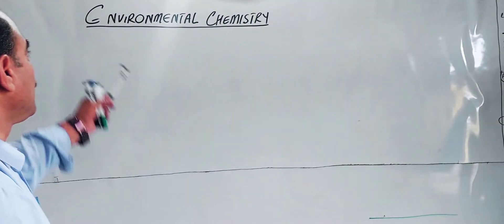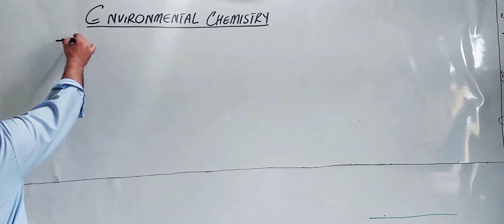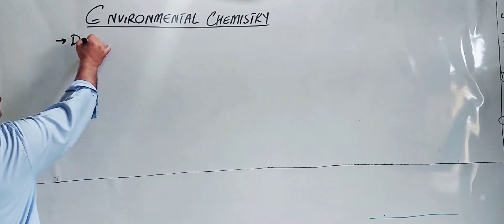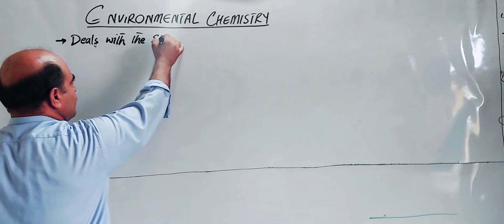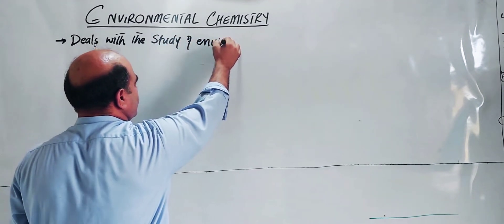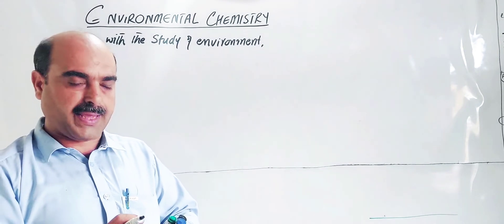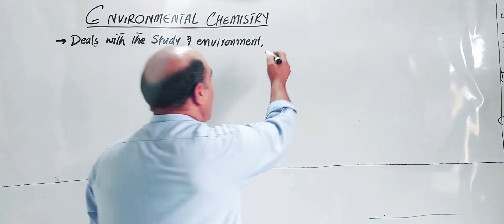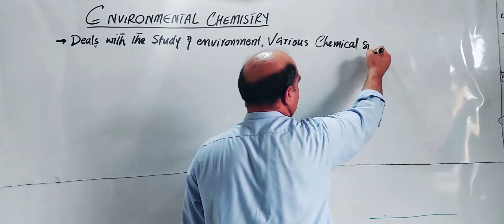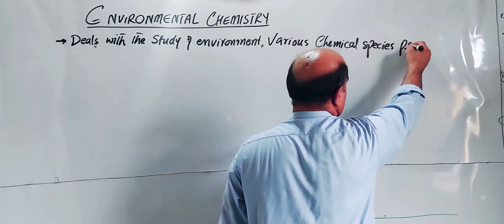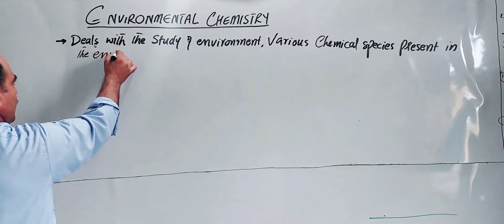Today our topic is Environmental Chemistry. I will give you the basic background. First: What is Environmental Chemistry? Environmental Chemistry is defined as the branch of chemistry which deals with the study of the environment — that is, our surrounding — and the various chemical species present in the environment.